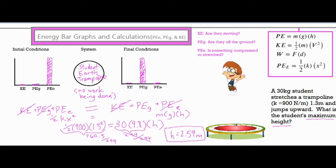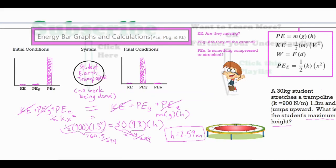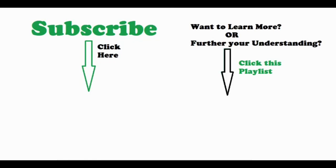To recap: set your system of all the main things involved and place them in the center circle. For initial and final conditions, think about what's happening at each point and ask yourself the series of questions to accurately make your bar graph. Once you set up the law of conservation of energy — where energy is constant for the system — cross out the zero terms, leave the types of energy still present, expand them into their formulas, plug in your numbers, and solve for the unknown variable. That concludes how to use energy calculations and energy bar graphs.